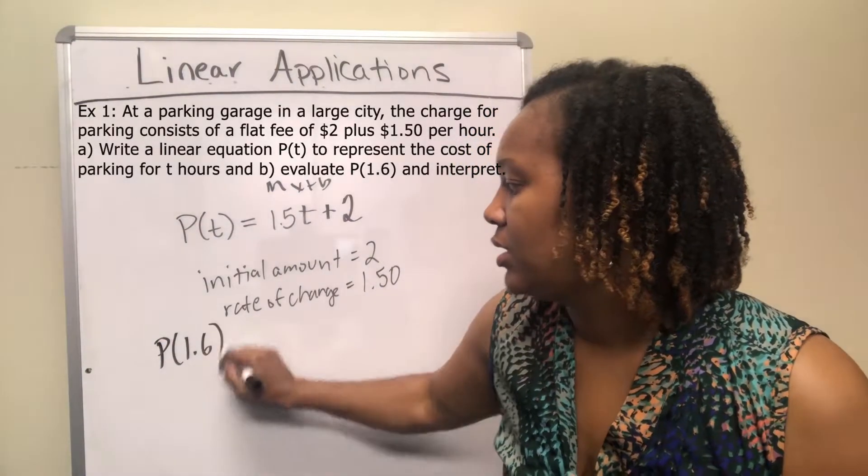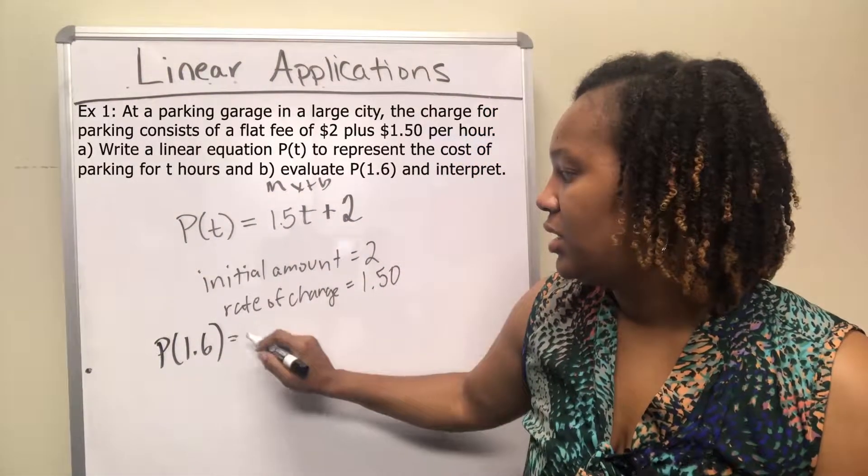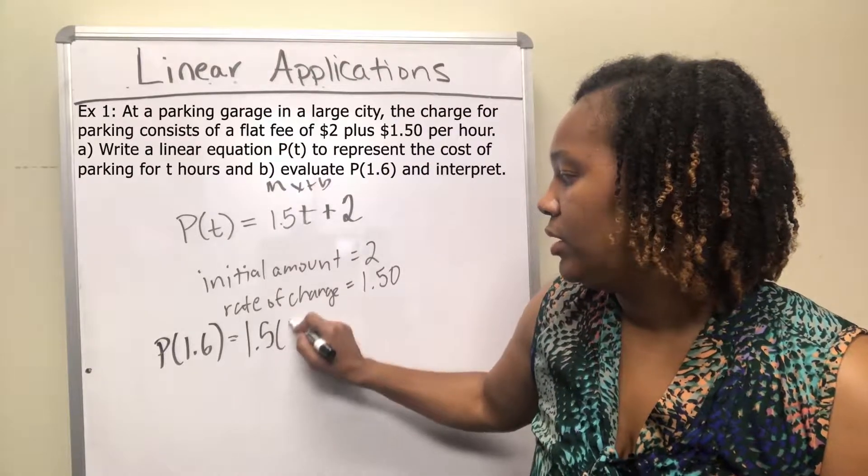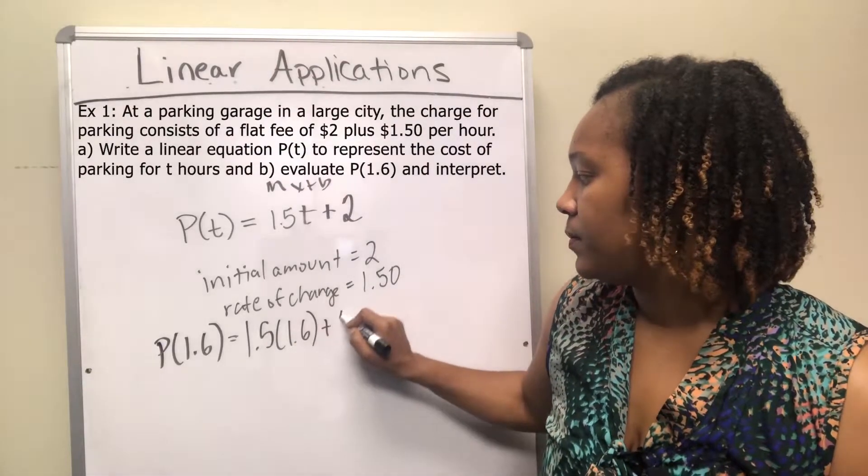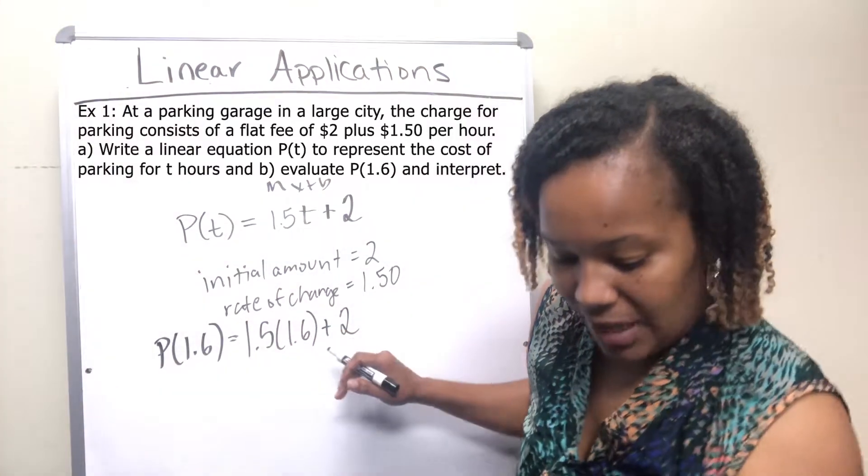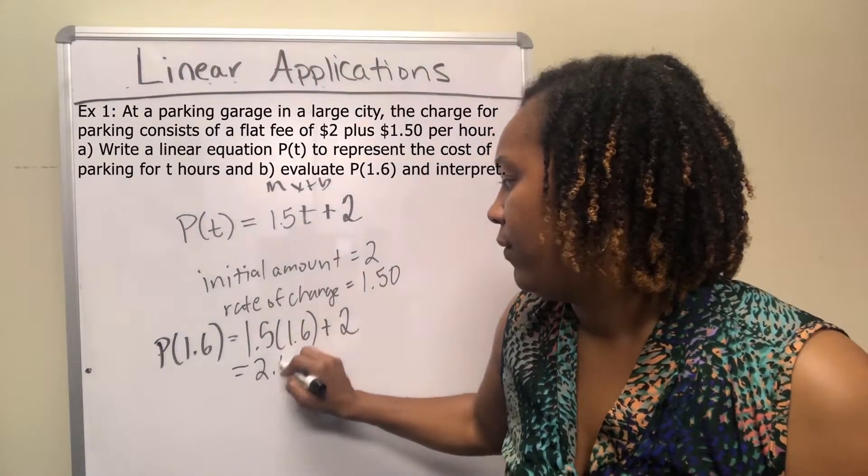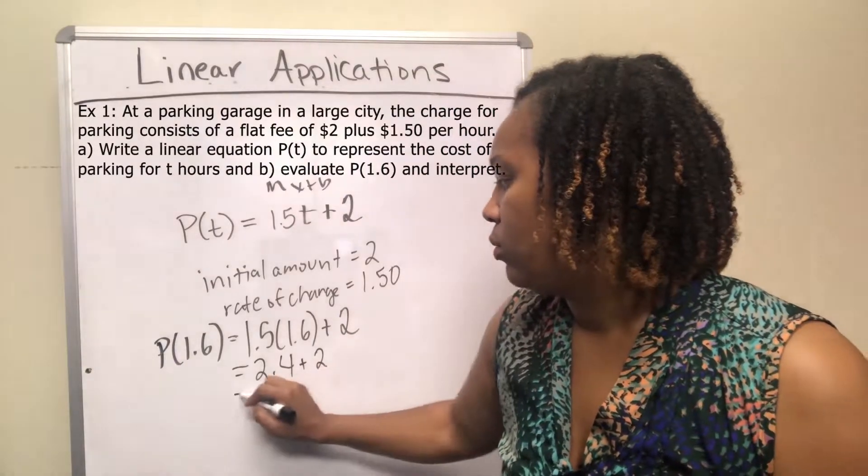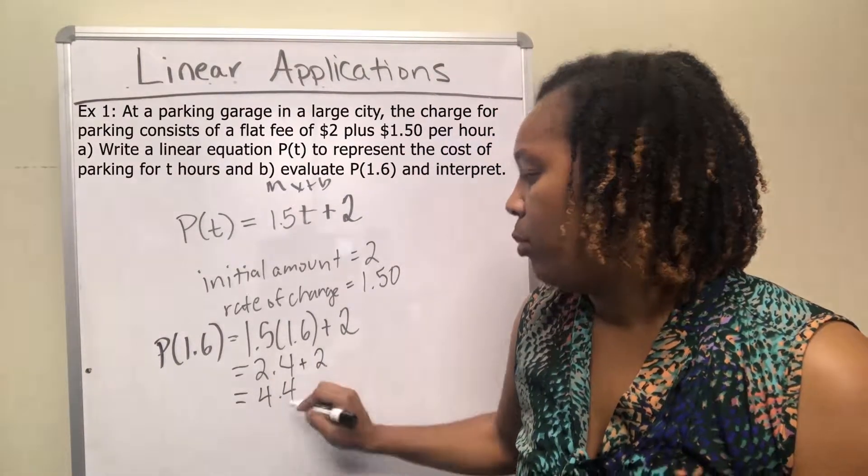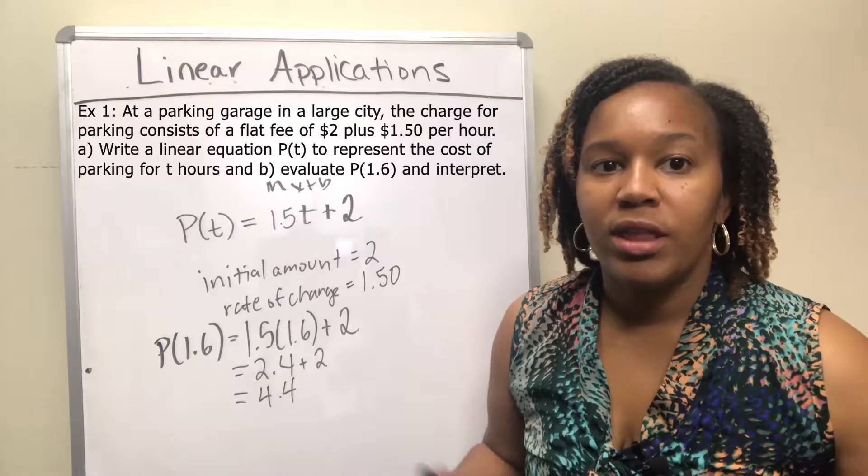And then we also want to find p of 1.6. That means wherever there is a t, replace it with a 1.6. 1.5 times 1.6 is 2.4, and so that becomes 2.4 plus 2, which is equal to 4.4.